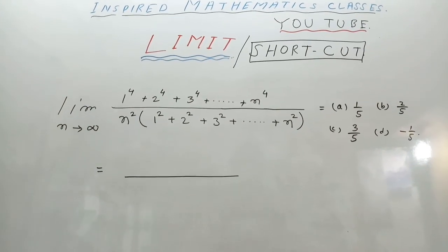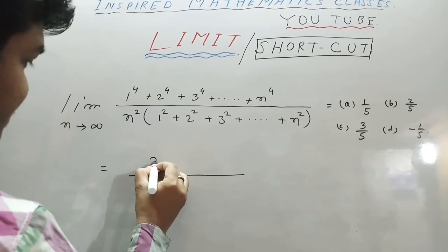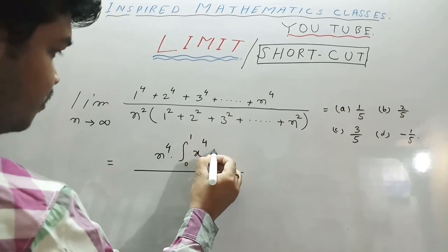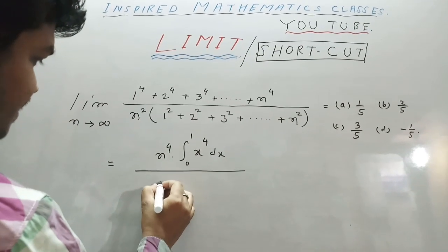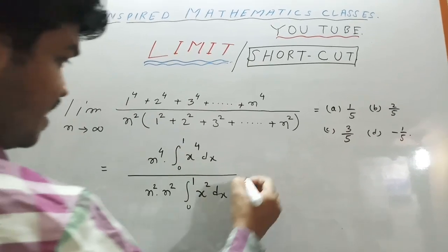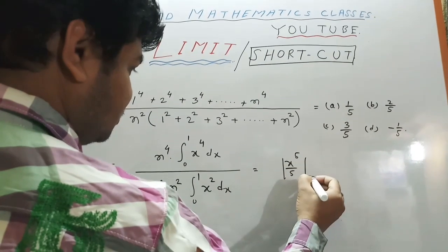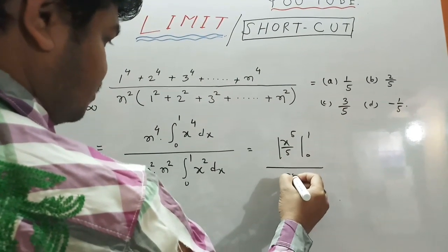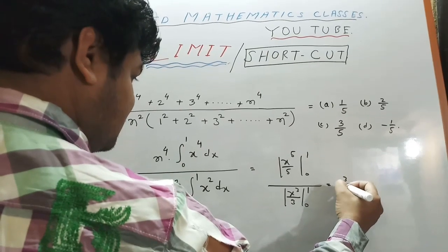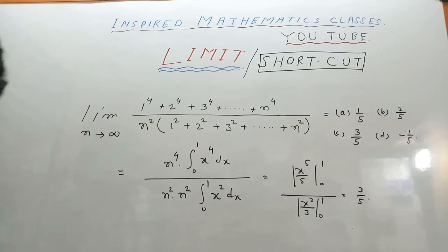Limit n tends to infinity. This is the sum, so what will be the answer? The answer is the integral from 0 to 1 over 4 dx, and 0 to 1 x squared dx, giving 0 to 1 upon 0 to 1. And this is 3 by 5. That's it — amazing method. Let's start.